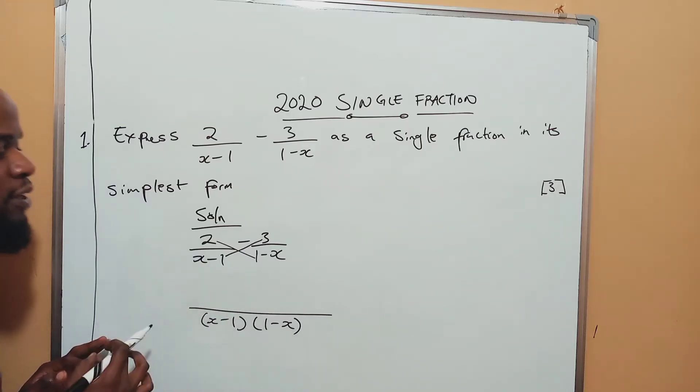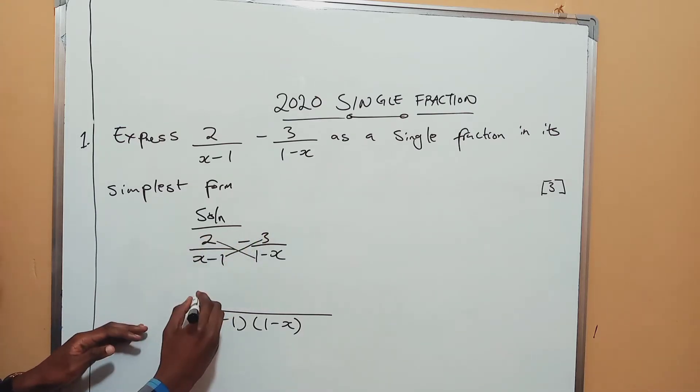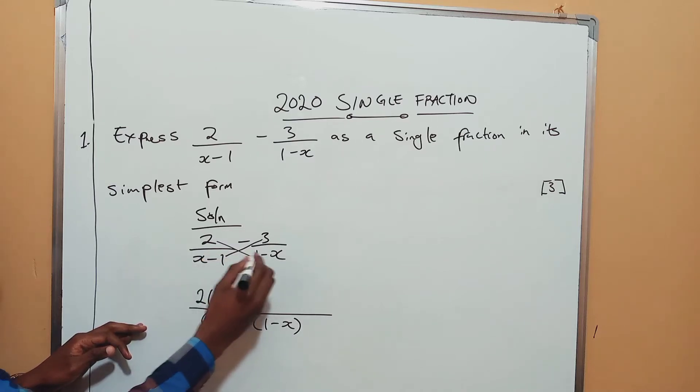Starting with the first number here, let's call this A, this is B. So put 2 here, then I'll put this in brackets - 1 minus x.